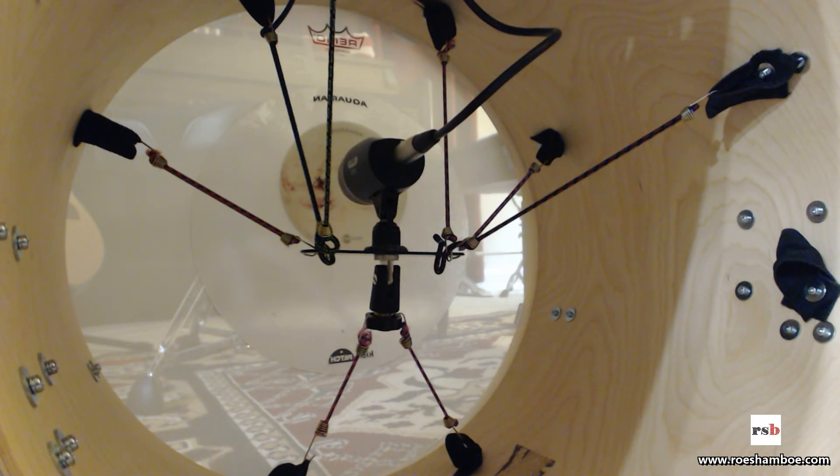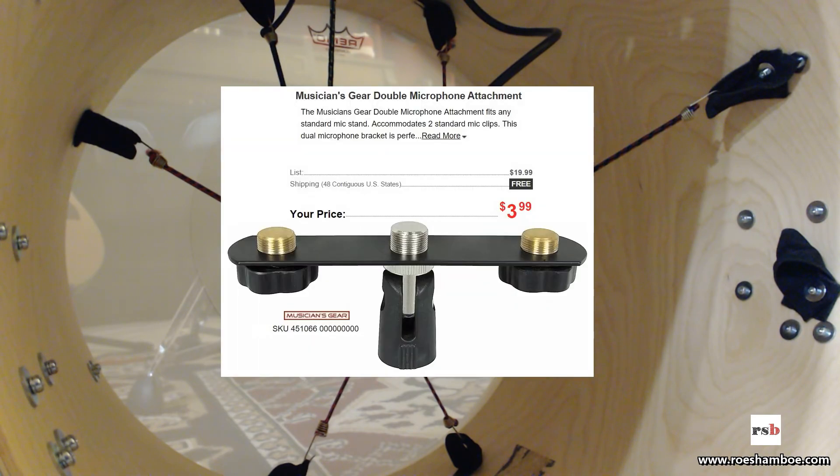There you go, guys. I hope everything makes sense. Let me throw up a quick image of the listing. It's Musician's Gear Double Microphone Attachment. You can see the SKU in the bottom left. This says four bucks, which sounds about right. I think I saw them going for two bucks a couple weeks ago on some kind of Thanksgiving sale or whatever.